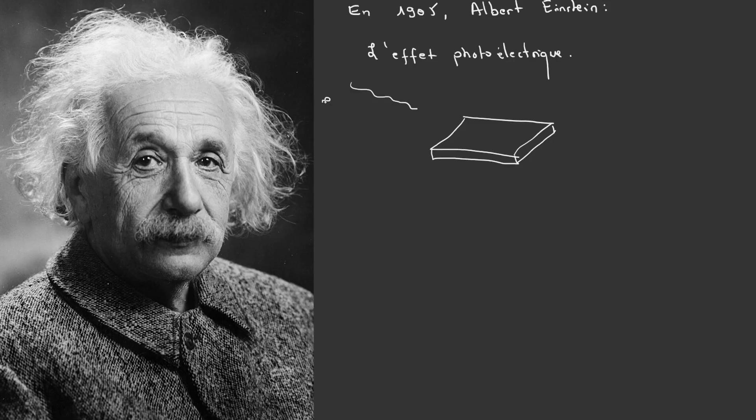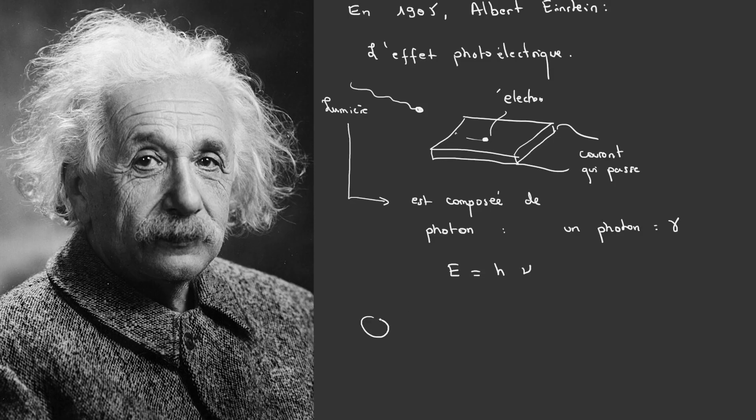In 1905, Albert Einstein extended this idea by explaining the phenomenon of the photoelectric effect. He postulated that light is composed of particles called photons and that a photon transfers its energy to an electron when it strikes a metallic surface. This exchange frees the electron and can generate an electric current. This principle is the basis of modern technologies like photovoltaic cells.